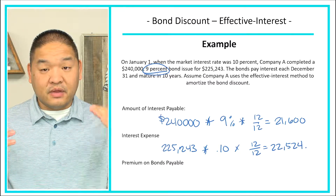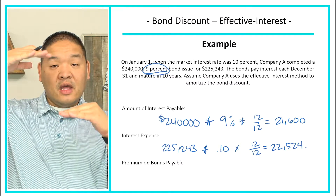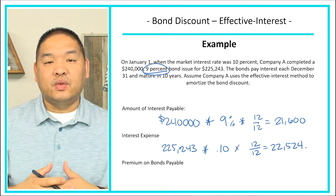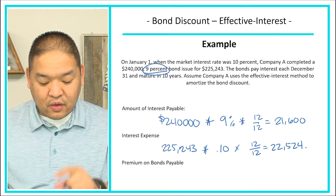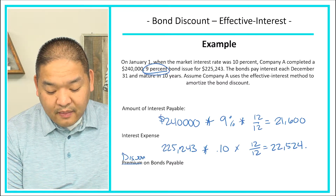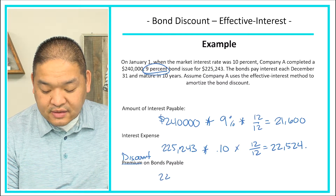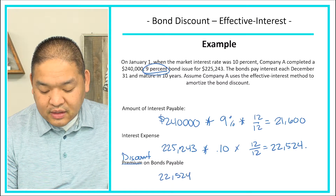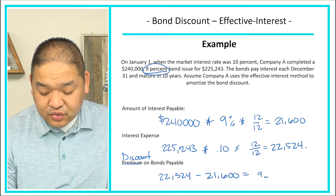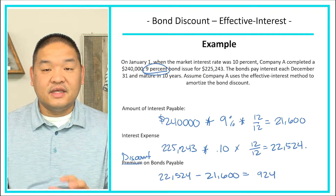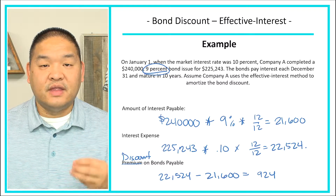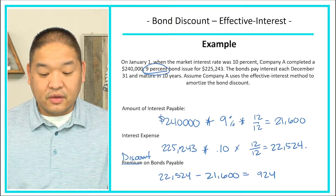Notice that our interest payable of $21,600 is less than our interest expense of $22,524. That difference is what we make up because we issued the bonds for less than what they're really worth. The discount on bonds payable amortization for year one is $22,524 minus $21,600 equals $924.